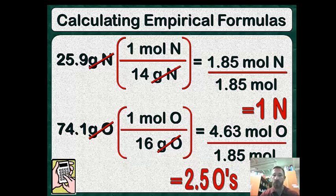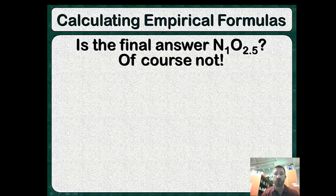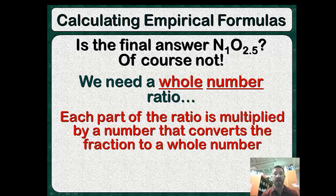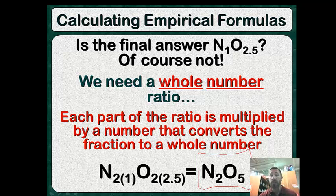These are not whole numbers, so both should be multiplied by 2. We can't have an empirical formula of N1O2.5 — subscripts must be whole numbers. So we multiply both by 2, and the final answer for the empirical formula is N₂O₅. That was a quick review of how to do an empirical formula.